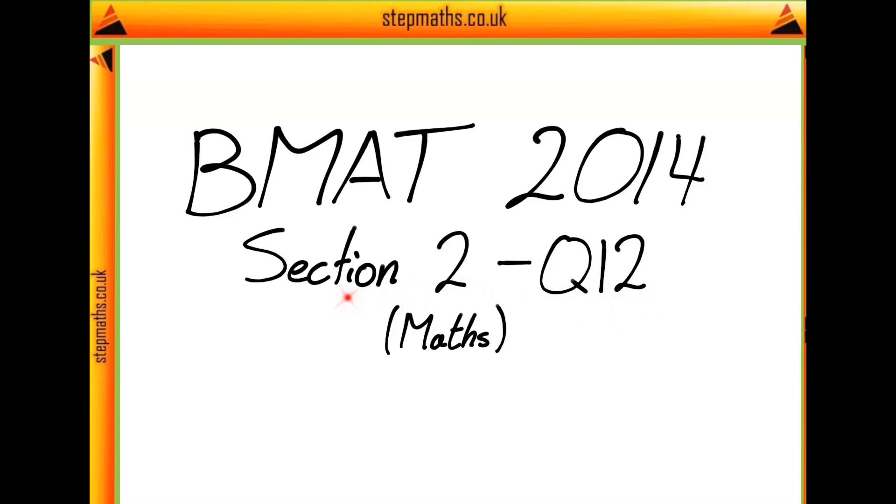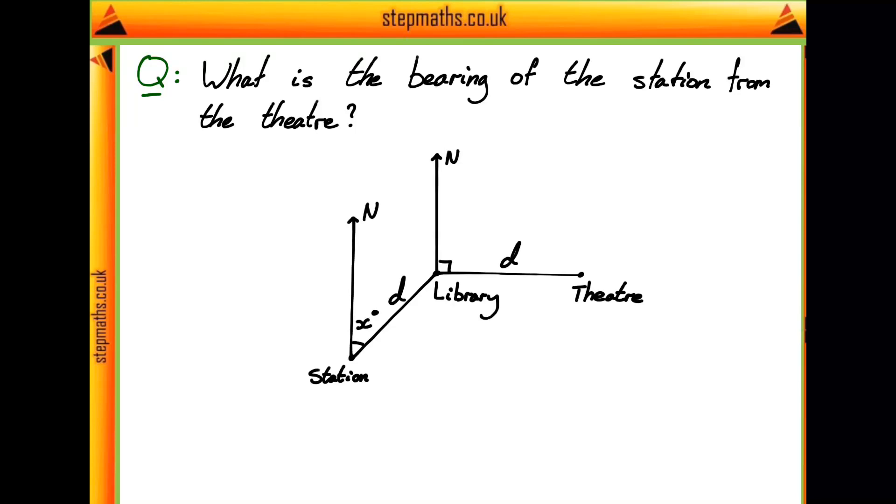Here we're going to look at question 12 from section 2 of the BMAT 2014 paper. In this question we're given the following diagram. We have a station and then at a bearing of x degrees, a distance d away, there's a library, and then directly east a distance d again and we have a theatre.